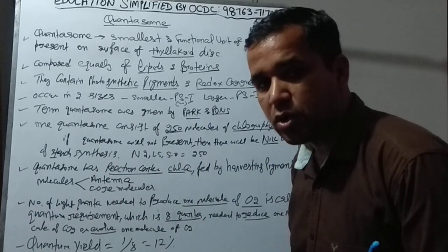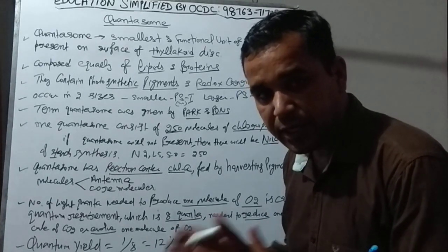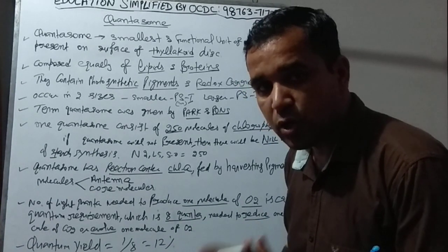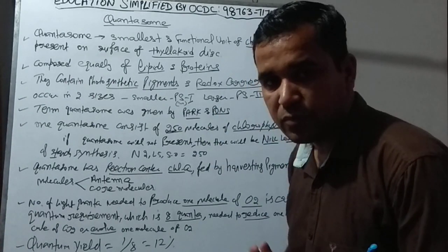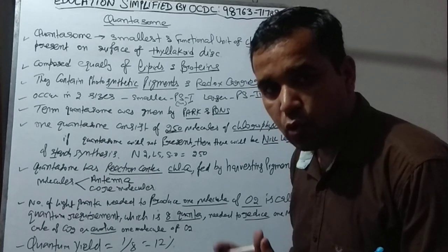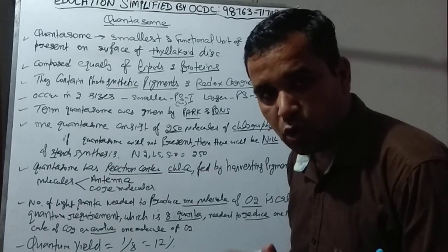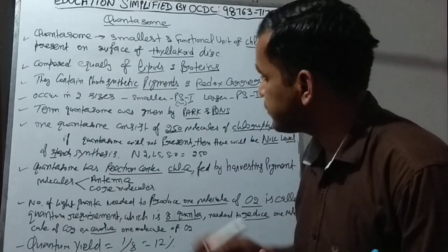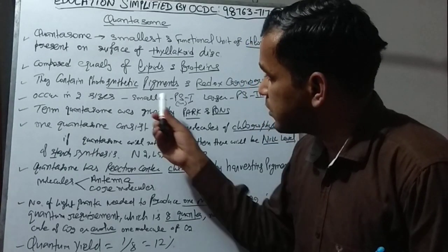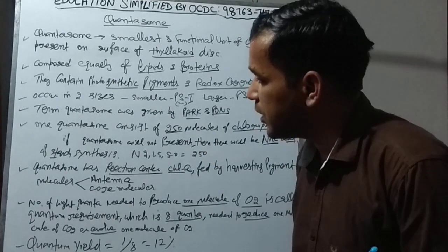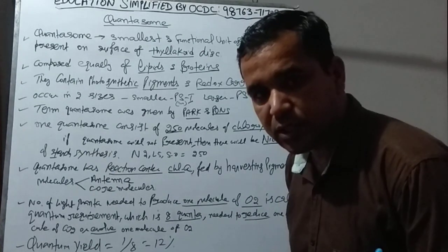Quantasome contains photosynthetic pigments and redox carriers — molecules involved in oxidation and reduction reactions. Photosynthetic pigments include chlorophyll a, chlorophyll b, c, d, e, bacteriochlorophyll a, and bacterioviridian — totaling 17 types of photosynthetic pigments. Quantasome exists in two forms and two sizes.